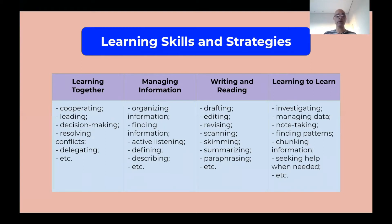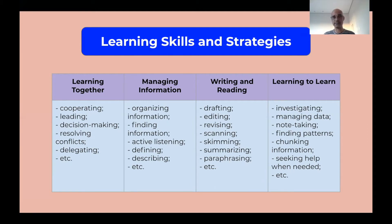The four strands are: learning together, managing information, reading and writing, and learning to learn. When it comes to learning together, students cooperate, make decisions, resolve conflicts, or delegate tasks. Managing information involves finding information, organizing it, listening to information, defining something, or describing something that they find.